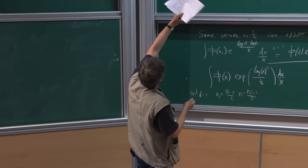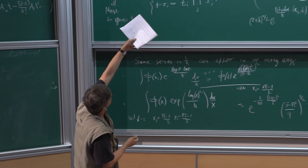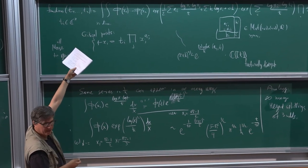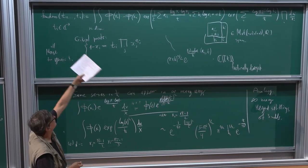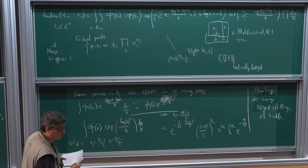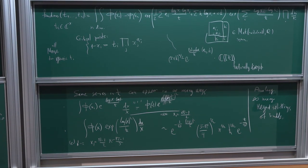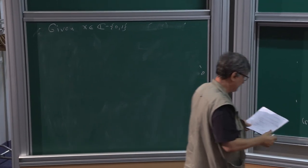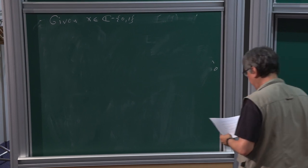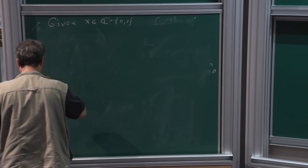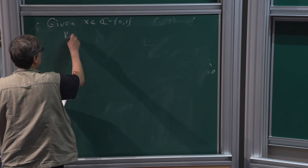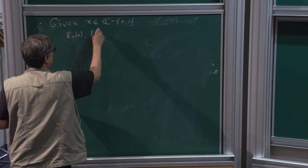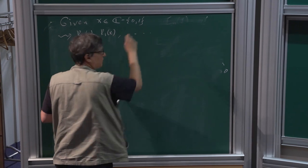Just by definition of F(x), for a given point x, you get this exponential prefactor, some constant times √(-x), and then a series with R_0(x). Consider given x in C minus {0, 1}.